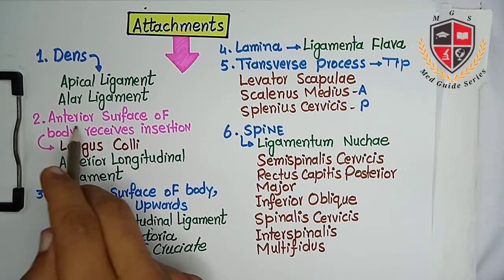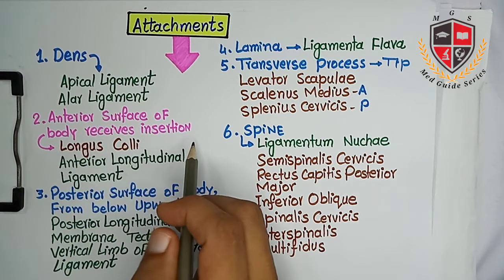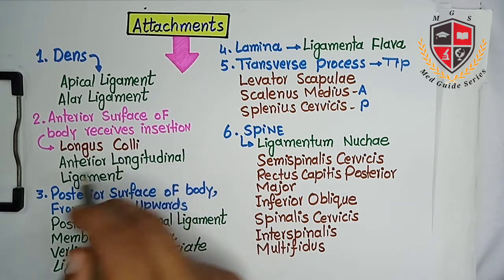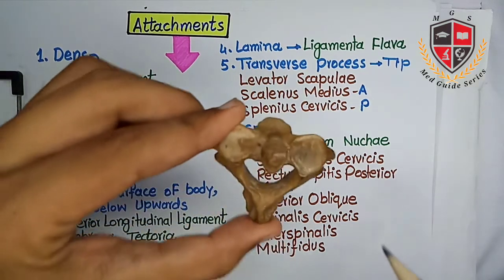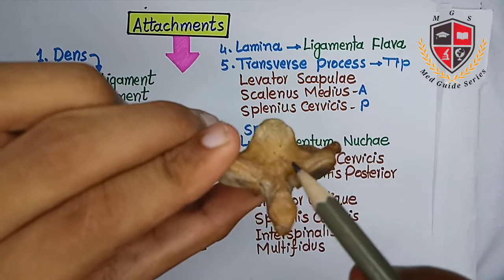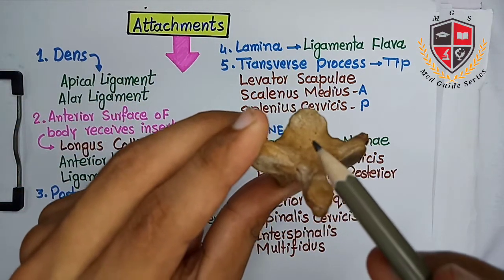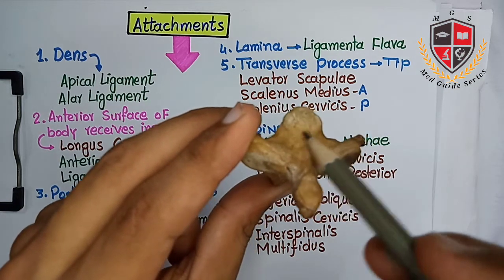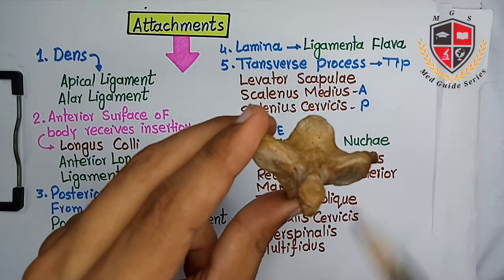The anterior surface of the body receives insertion of the longus colli muscle and anterior longitudinal ligament. This is the anterior surface of the body. It receives insertion of the longus colli muscle and anterior longitudinal ligament.